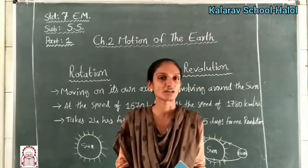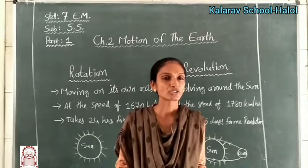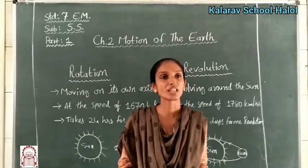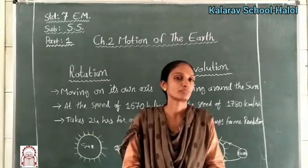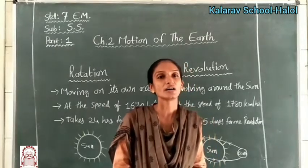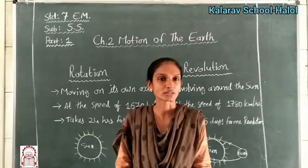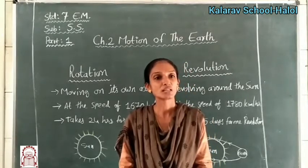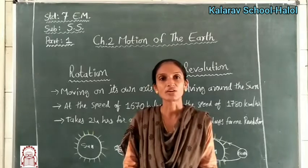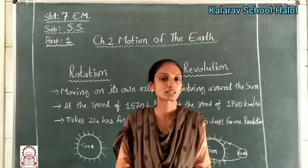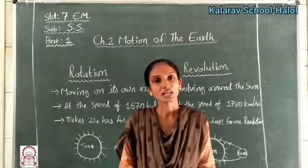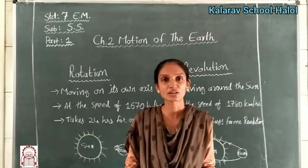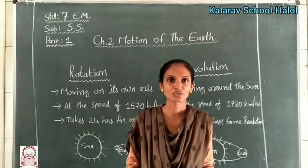The tilt of the earth means the slant of its axis. Because of this tilt, sometimes it is slanted more towards the sun and sometimes less, and this causes variations in the length of days and nights. We will complete the next part in the next session. Thank you very much.